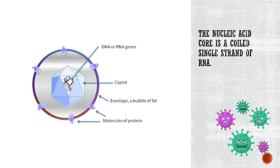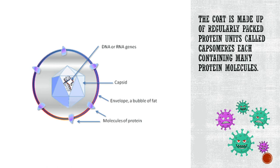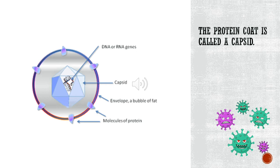Viruses' nucleic acid core is a coiled single strand of RNA. The coat of viruses is made up of regularly packed protein units called capsomeres, each containing many protein molecules. The protein coat of a virus is called a capsid.